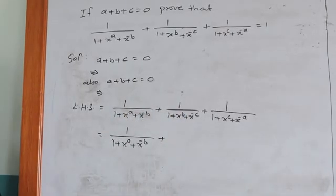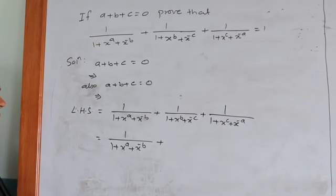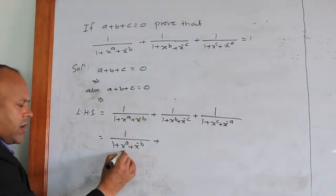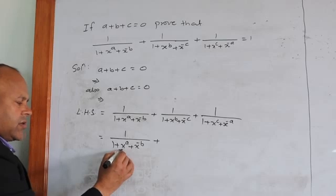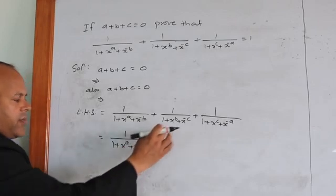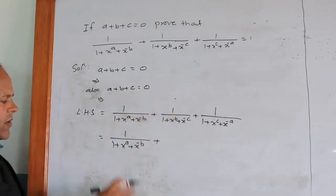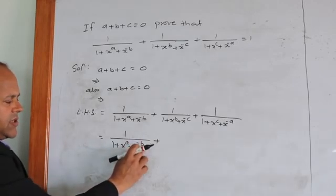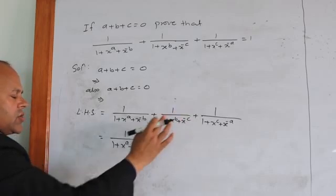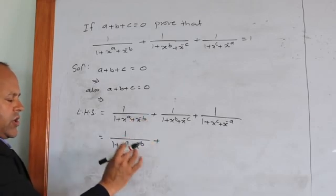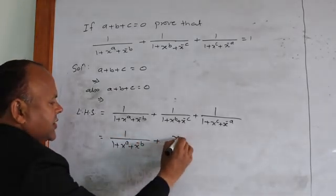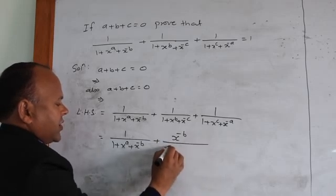For the second fraction we have to multiply both numerator and denominator by a certain quantity. Which quantity? That will be determined by looking at the denominator of the first fraction. Here we have x raise to the power a and x raise to the power minus b. Either by x^a or by x^(minus b) we have to multiply. Since the second fraction has x raise to the power b in its denominator, multiplying by x^(minus b) gives x^0 which is 1. So the appropriate quantity to multiply the second fraction is x raise to the power minus b — both numerator and denominator are multiplied by x^(minus b).